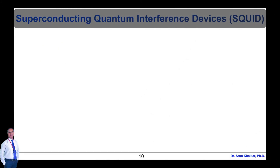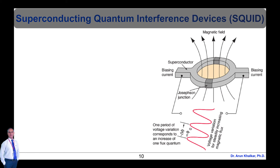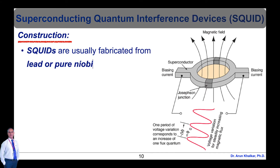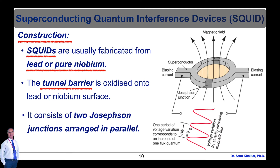Now let's see SQUID — S-Q-U-I-D — which means Superconducting Quantum Interference Devices. SQUID is a very sensitive magnetometer used to measure extremely subtle, i.e. very small, magnetic flux of the order of 10⁻¹⁸ tesla. Its working is based on superconducting loops containing Josephson junctions. SQUIDs are usually fabricated from lead or pure niobium. The tunnel barrier is oxidized onto the lead or niobium surface. The entire device is cooled to within a few degrees of absolute zero with liquid helium. A schematic of a two-junction DC SQUID is shown in this figure.